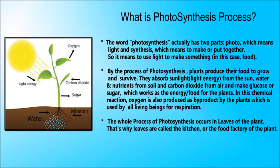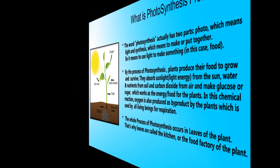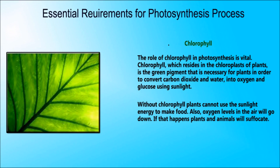The whole process of photosynthesis occurs in the leaves of the plant. That is why leaves are called the kitchen or food factory of the plant. Now we will see what are the essential requirements for the photosynthesis process.